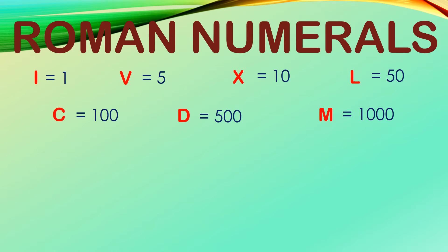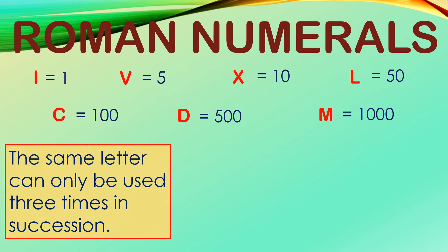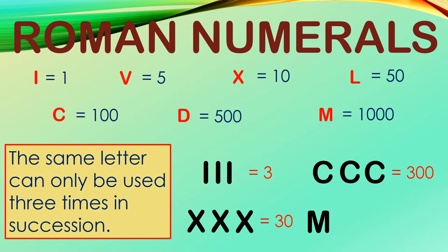There are some points to consider when reading and writing Roman numerals. Take note that the same letter can only be used three times in succession and their values are added. I repeat, only three times in a row. For example, I is for 1, so you can use it three times to express number 3. X is 10, so you can use it three times to show 30. C is for 100, you can use it three times to show 300. And M for 1,000, which means you can express 3,000 by using it three times in a row.